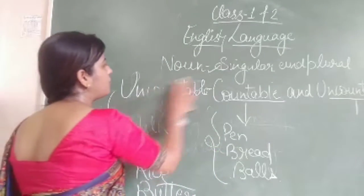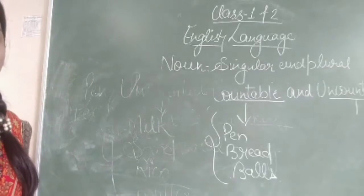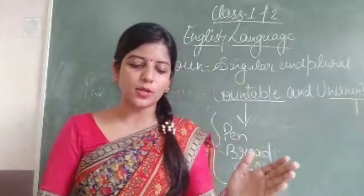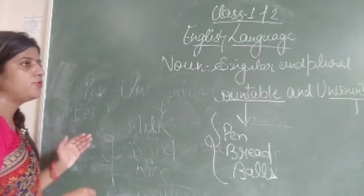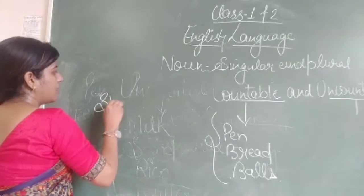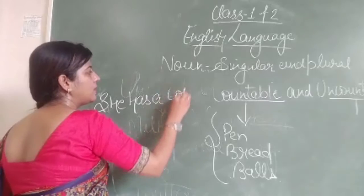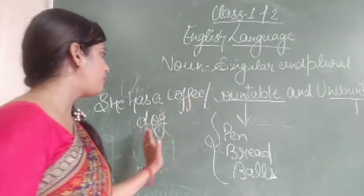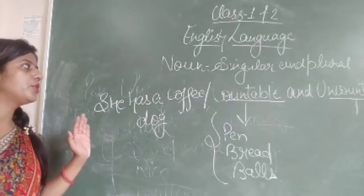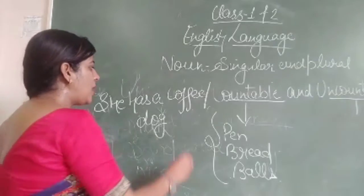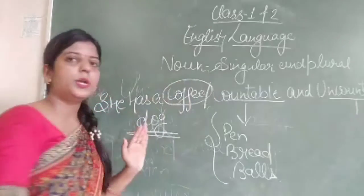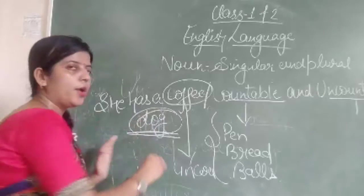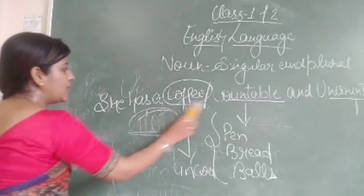Let me give you some examples. Here I have written: 'She has a coffee or dog.' Now if I ask you to identify the countable noun, what would it be? It would be 'dog'. Why? Because we cannot count coffee, so coffee is an uncountable noun, and dog is a countable noun. You need to identify them in this way.